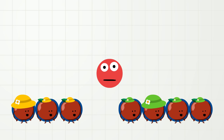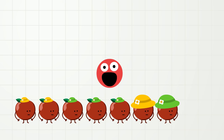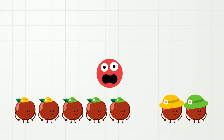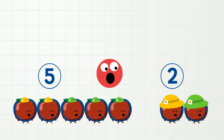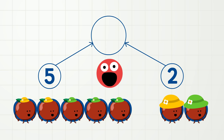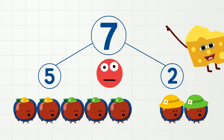Now let's have all of the apples with little hats go here, and all of the apples with big hats go over there. So now we have one, two, three, four, five apples with little hats, and one, two apples with big hats. Add them together, and we have seven apples! So the numbers five and two also make the number seven. Seven!